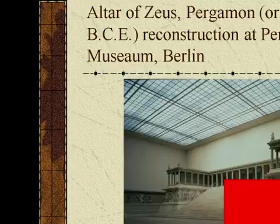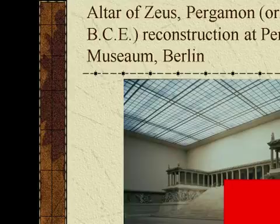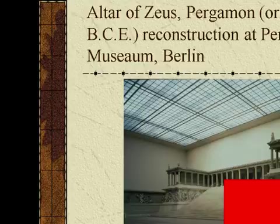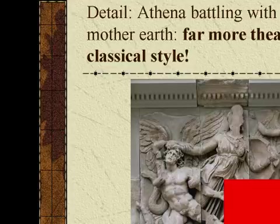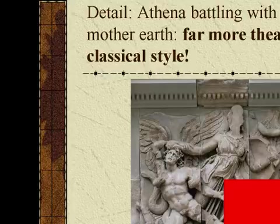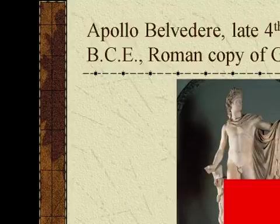The Altar of Zeus at Pergamon, originally built in 175 BCE, with its reconstruction now at the Pergamon Museum in Berlin. A detail shows Athena battling with Alcyoneus, son of Mother Earth — far more theatrical than the classical style.